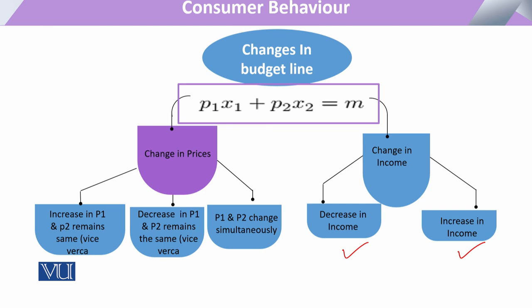If we look at prices — the consumer has two commodities, plotted on each axis. The price of x1 can increase while p2 is constant, meaning x2 is constant and only the price of x1 increases. Another case is that the price of x1 decreases while p2 is constant. Also, the price of x1 can be constant while the price of p2 increases, or the price of x1 is constant and the price of x2 decreases.